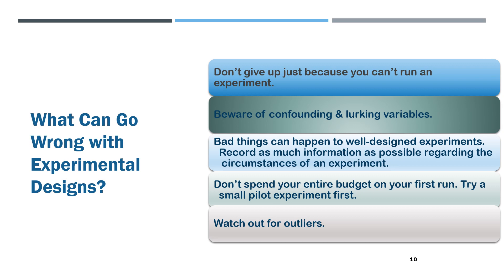These are the things that can go wrong with experimental designs. Don't give up just because you can't run an experiment. Be aware of confounding and lurking variables — bad things can happen to well-designed experiments. Record as much information as possible regarding the circumstances of an experiment. Don't spend your entire budget on a first run; try a small pilot experiment first. And watch out for outliers.